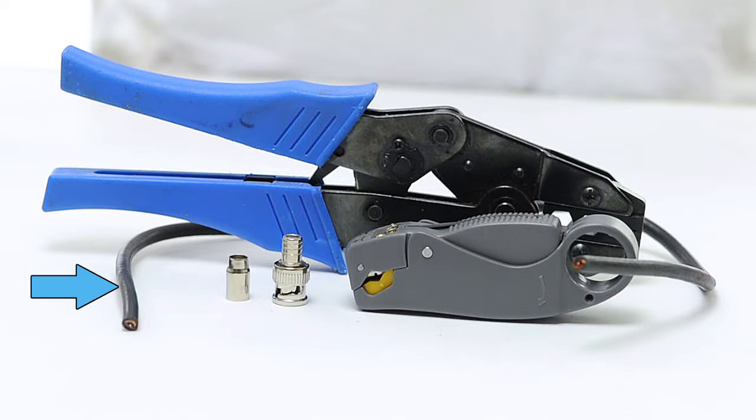For today's project, we're going to need an RG58 cable, a male BNC crimp connector, a coax stripper, and a crimp tool.